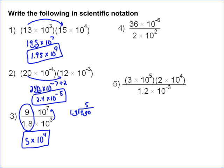Same thing on number 4: 36 divided by 2 is 18, and then we've got times 10. We're doing subtraction, so negative 6 minus 2 is 10 to the negative 8. However, this is not your correct answer.